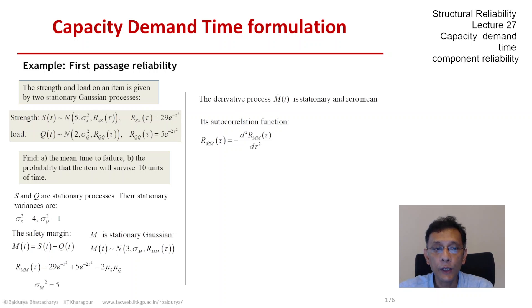Since we know the autocorrelation function of M, we can easily find that of M dot, and that turns out to be a function of the lag tau.